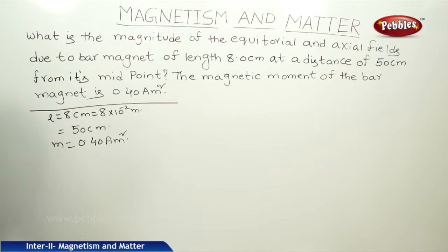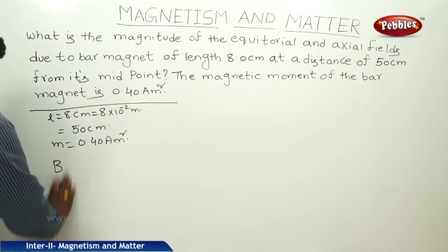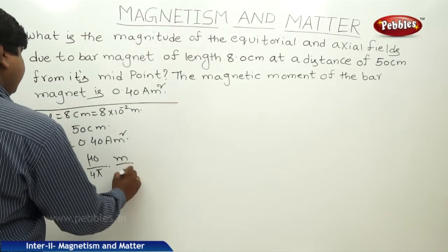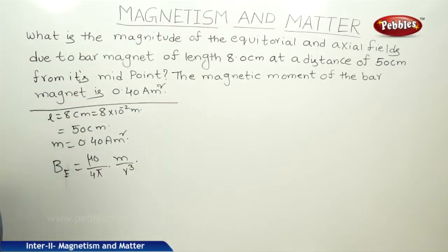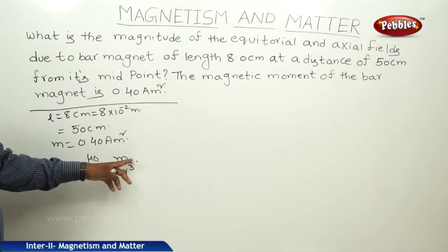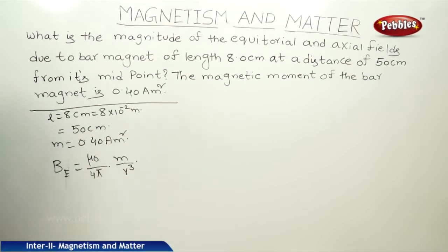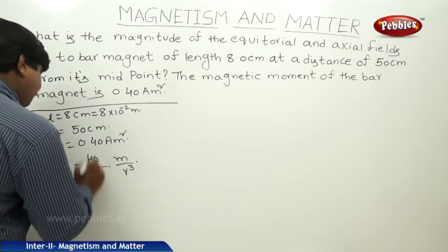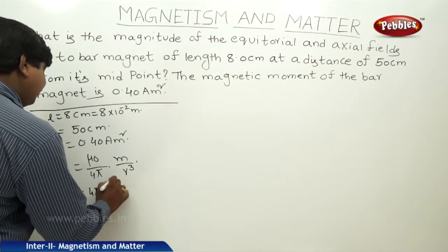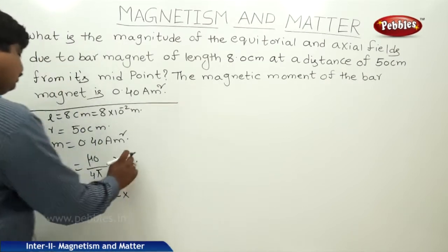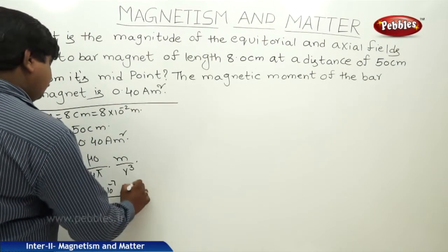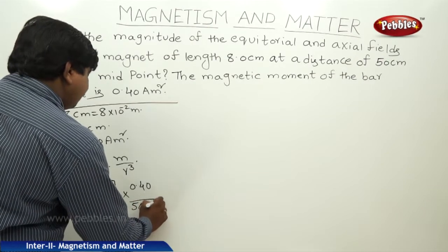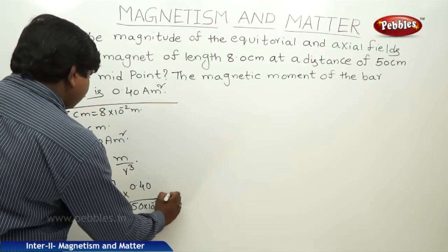To find the equatorial field B_E, we use the formula mu naught by 4 pi into M by R cube. Here, mu naught by 4 pi is 10 to the power of minus 7, M is 0.40, and R is 50 centimeters, that is 50 into 10 to the power of minus 2 meters. Substituting: 10 to the power of minus 7 into 0.40, divided by 50 into 10 to the power of minus 2 whole cube.